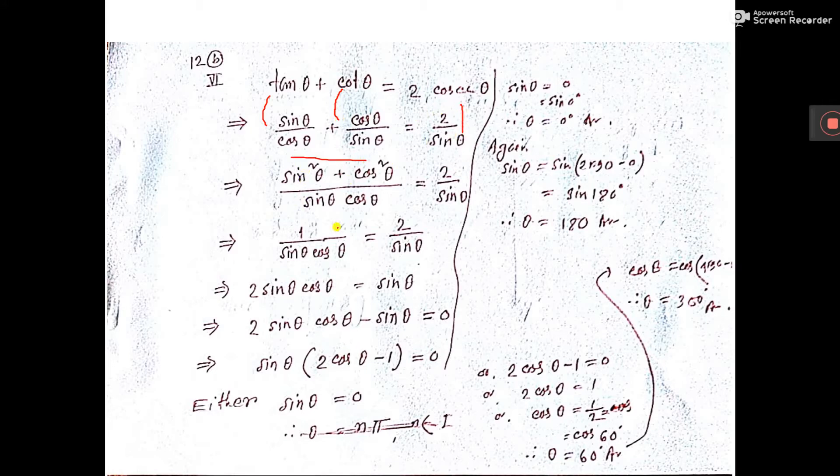Now take LCM here, so sin into sin will be sin square theta, cos into cos will be cos square theta.